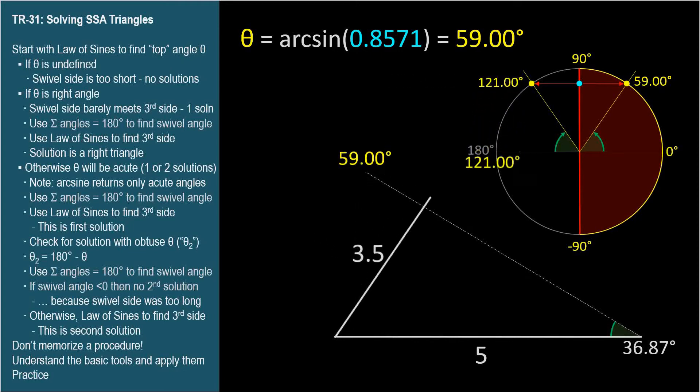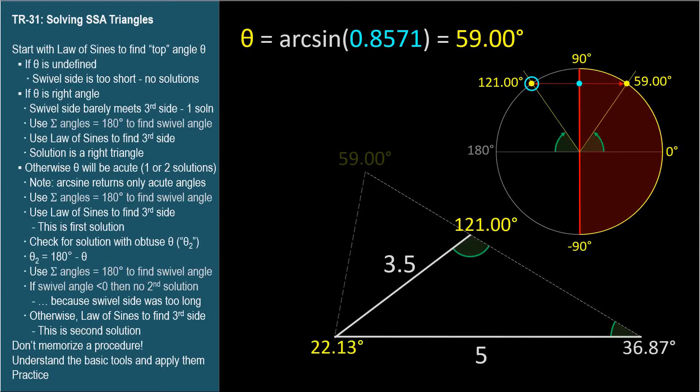That's the second answer for theta. Draw a new triangle. It doesn't need perfect scale. With theta equals 121.00 degrees. Now to find the last angle, the swivel angle, subtract the two known angles from 180 degrees. We get 22.13 degrees. And apply the law of sines again to find the length of the third side, which is 2.2.